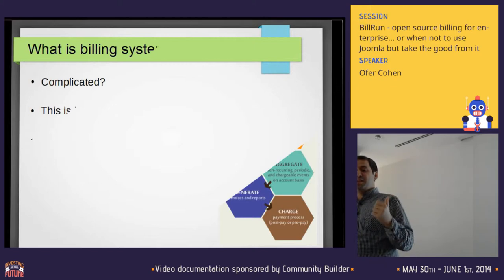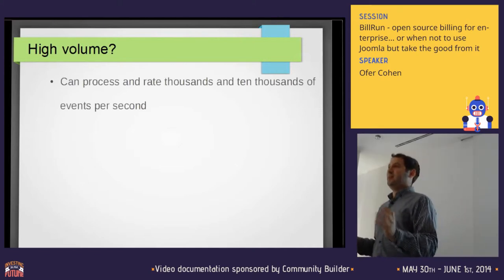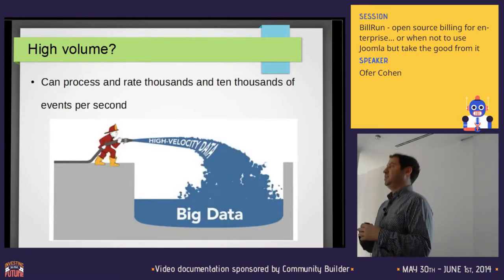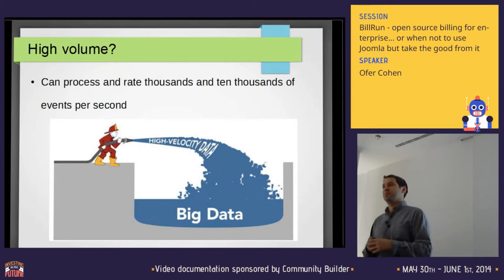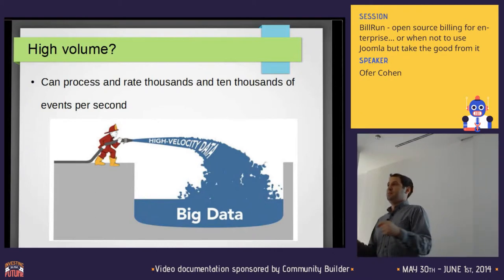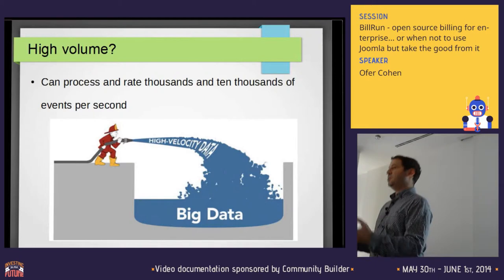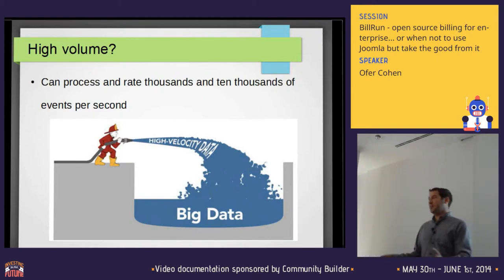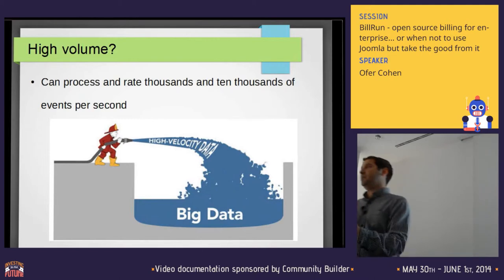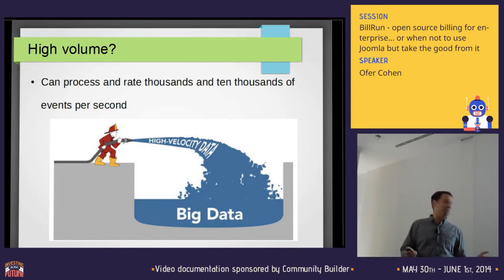The previous slide looks very simple, but the biggest challenge is the high volume. It could be ten thousand events per second. If you have a company with one million customers, it can be twenty thousand events per second, because when your phone uses data, you get a CDR. CDR is the event data, generated each two to ten minutes depending on how you use it. Even when you're on Wi-Fi, your phone is still using 3G data unless you disable it. So at night, an event can be generated each hour — for a million customers, that's a lot of events, even at night.